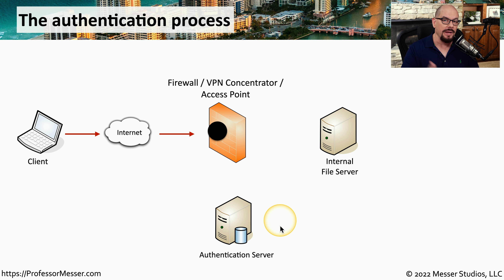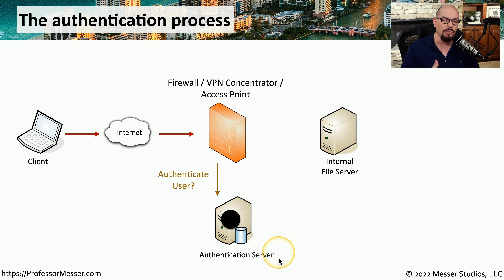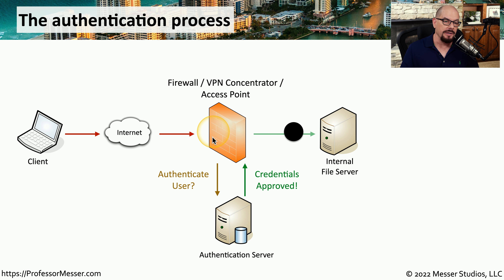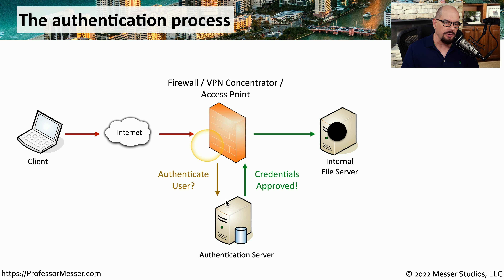In order to check that we have the right username and password, that device will send a message to the authentication server with our login credentials. Those credentials will be checked on the server. If our credentials match what's on the authentication server, a message is sent back saying those credentials are approved and that person can access the device. Now that our credentials have been approved, we have permission to communicate with the other devices on the network. The key to this process is the communication that occurs to the authentication server, and in this video we'll look at a number of different ways that this conversation can take place.